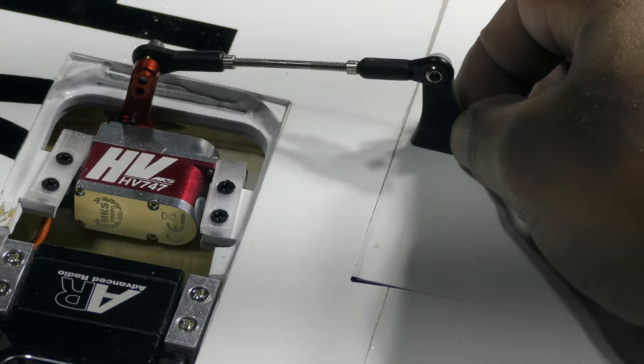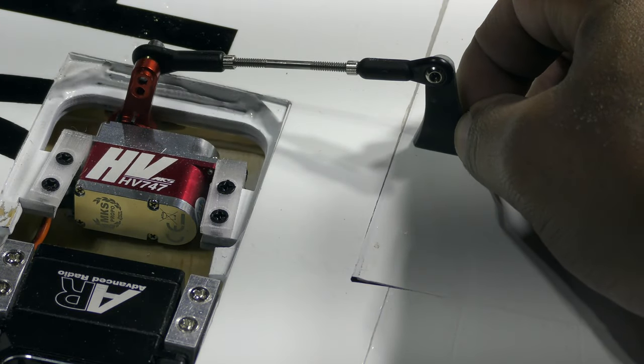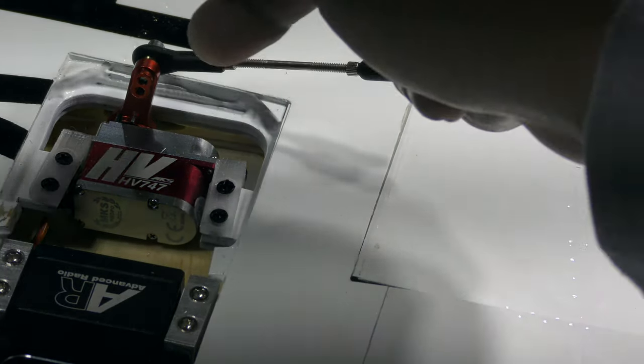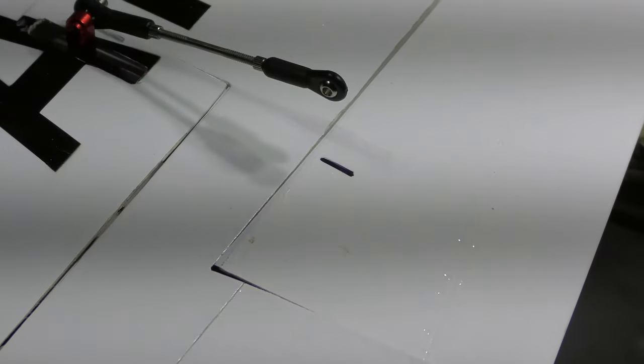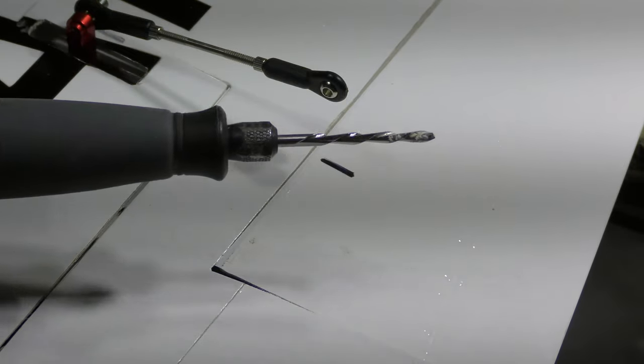And then obviously I gotta line it up so that it comes out as square as possible to here. So I'll do that and then I'll come back. Marked my spot and I'm basically gonna use my Dremel with this bit to just cut through that.